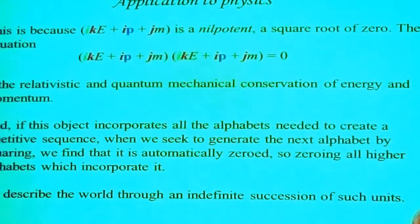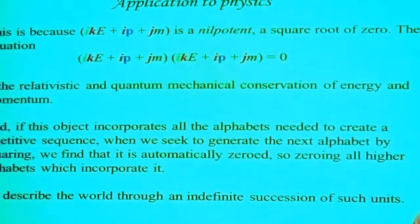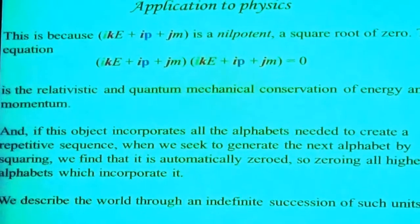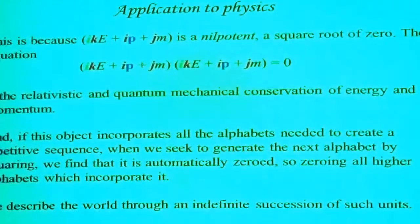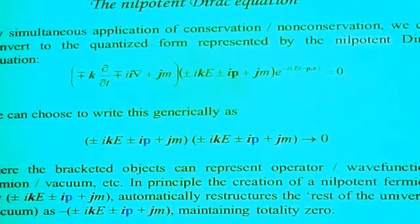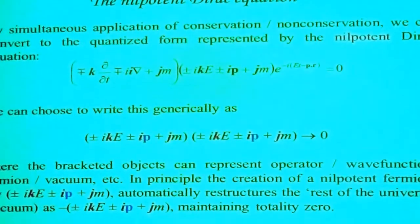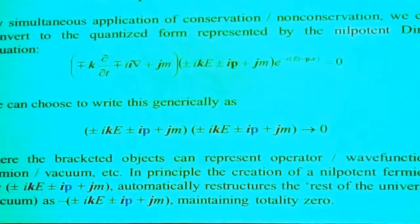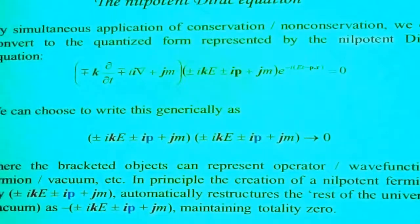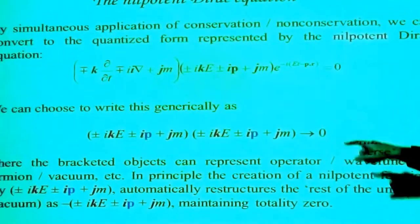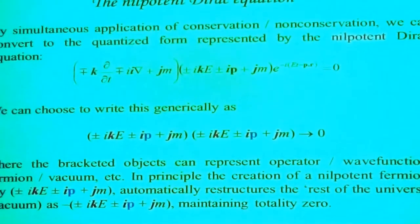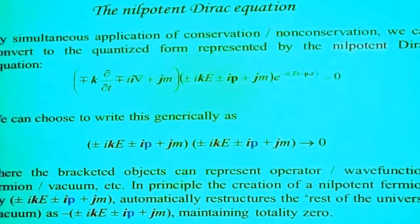If this incorporates all the alphabet needed to create a repetitive sequence, and we seek to create the next alphabet by squaring as we do, we find it's automatically zeroed. So zeroing all the higher alphabets is incorporated. We've found a special structure within our infinite structure which can be used as a repeating unit cell of the process. We can define the world through an indefinite succession of such units. This now becomes the Dirac equation — the same as this but represented in a different way.